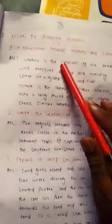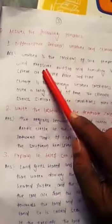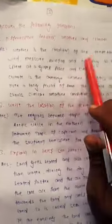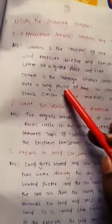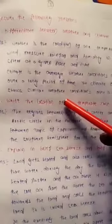Answer the following question. Differentiate between weather and climate. Weather is the condition of air, temperature, wind, pressure, rainfall and humidity in the atmosphere at a place at a given time. Climate is the average weather condition of a place over a long period of time. The climate of a place shows similar weather conditions over a big area.